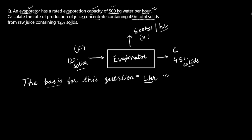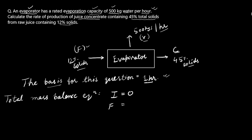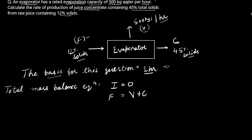The total mass balance, inflow = outflow: F = V + C. Substituting V = 500: F = 500 + C. This is Equation 1.